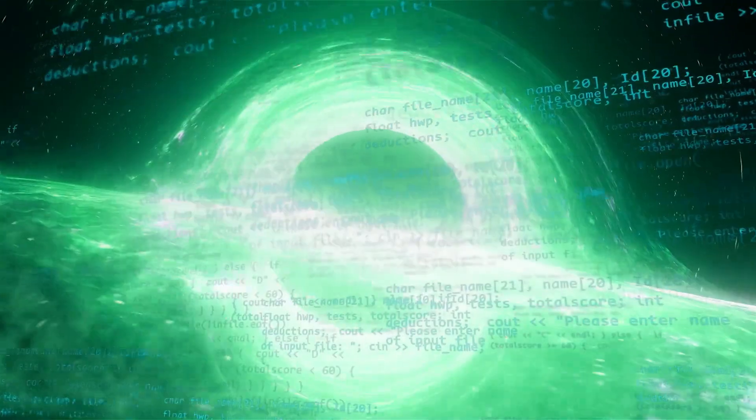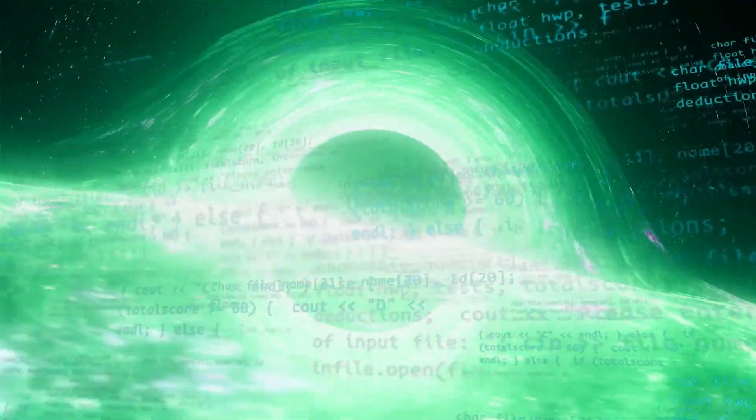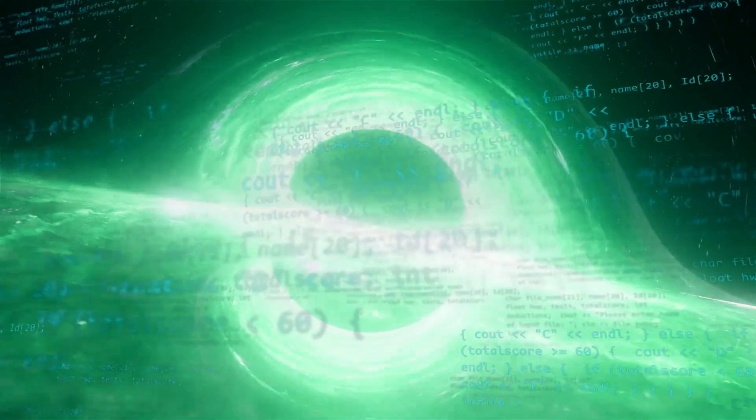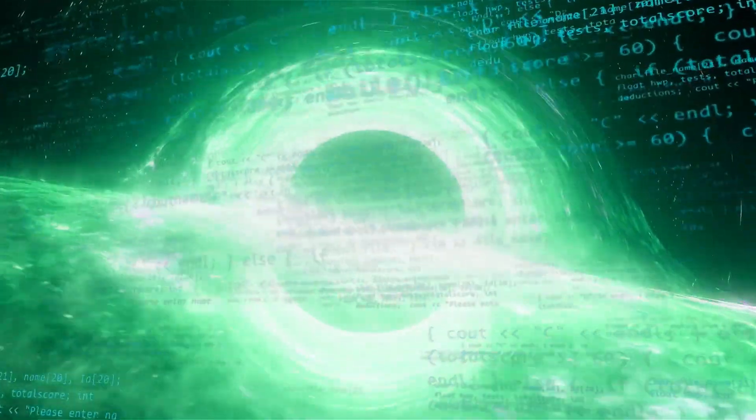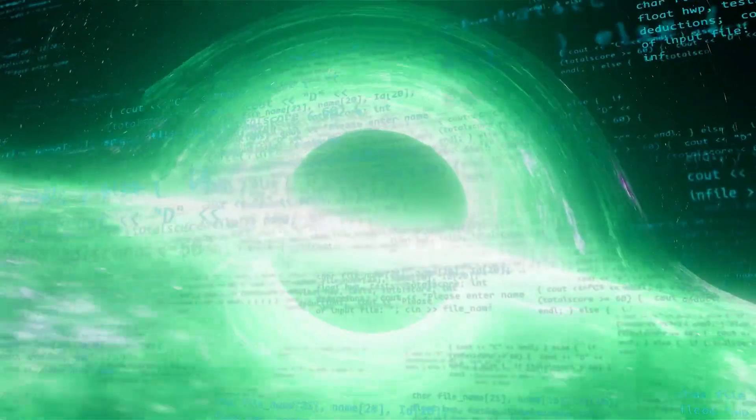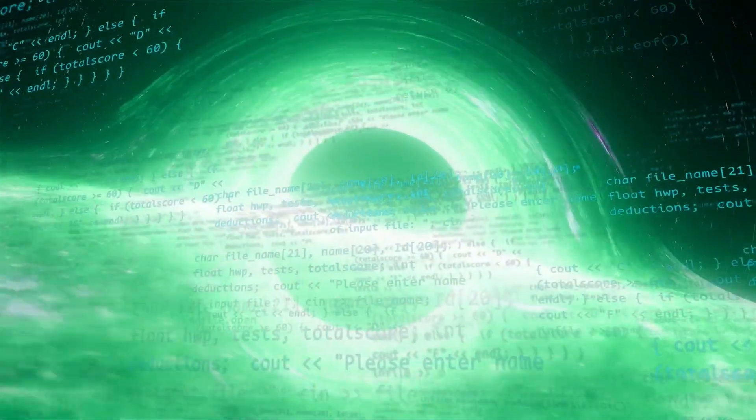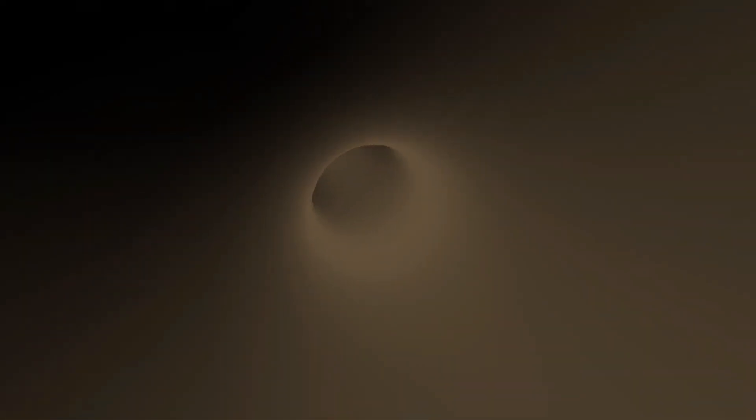According to Einstein's theory of general relativity, once matter crosses a black hole's event horizon, it is lost forever, taking with it any record of its origins. This led to the long-standing belief that black holes are cosmic dead ends, where the history of the stars that formed them is obliterated beyond recovery.